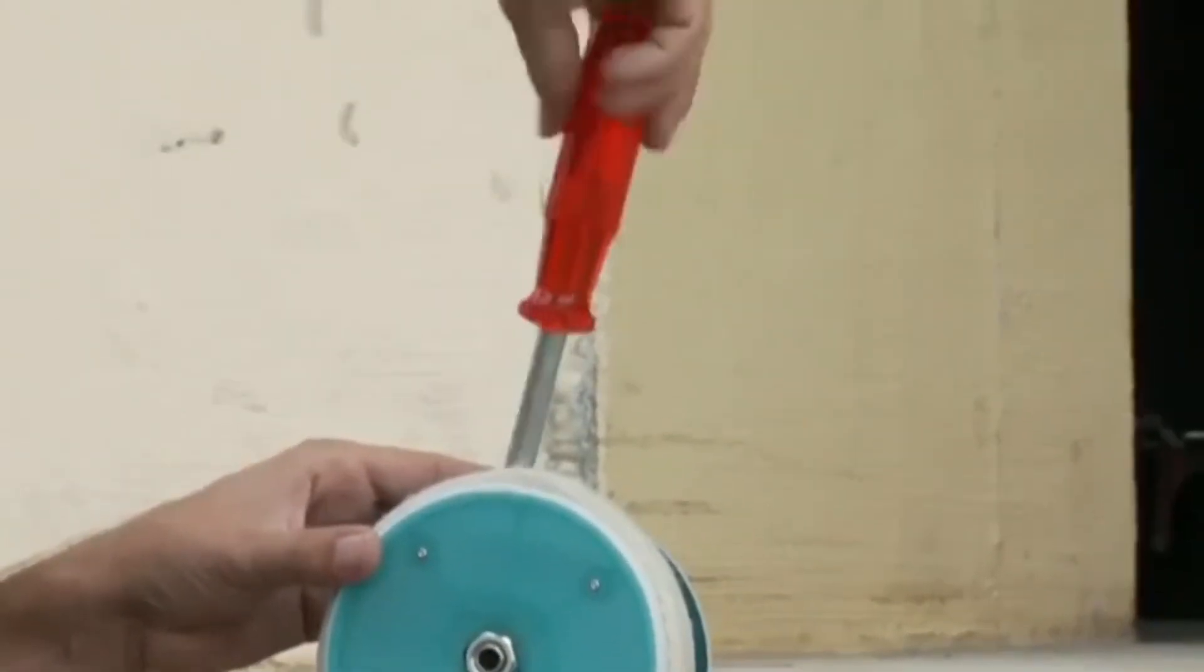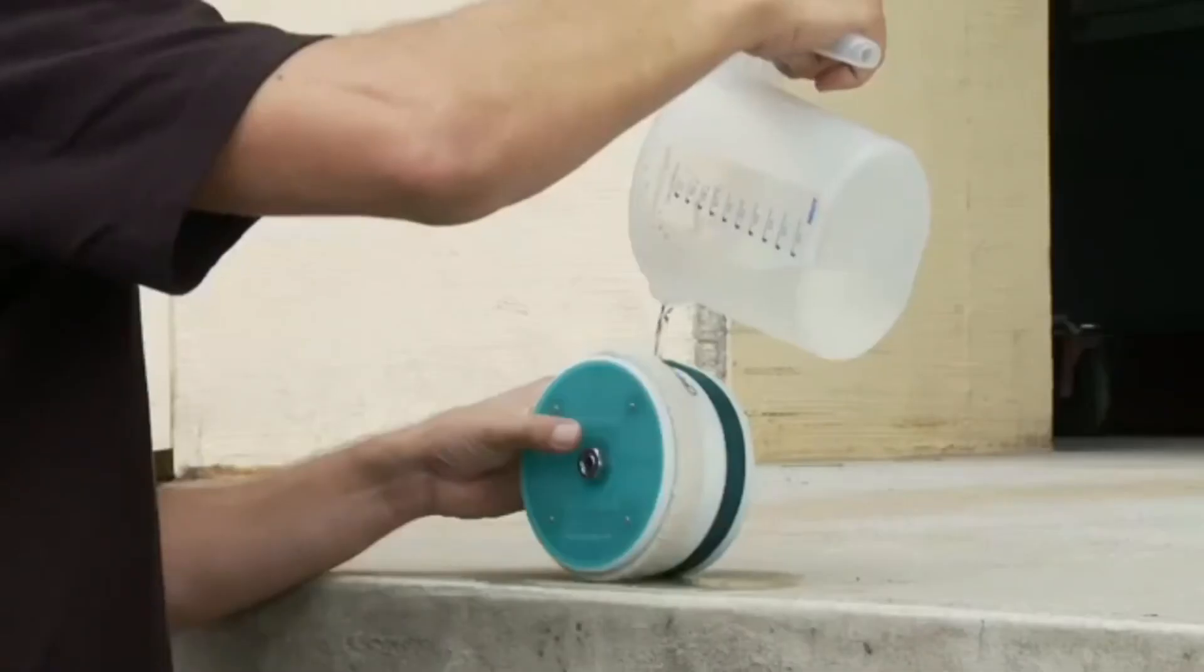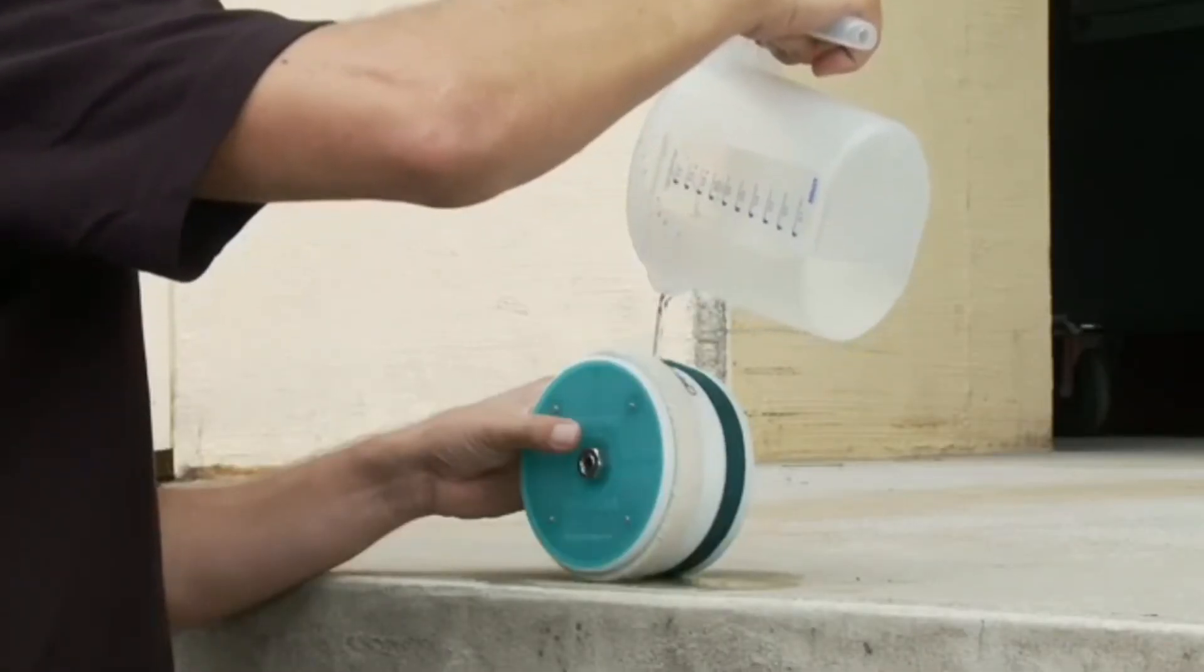Close the copper sulphate compartment by using the Allen screwdriver included. Then open the water compartment and fill with water.